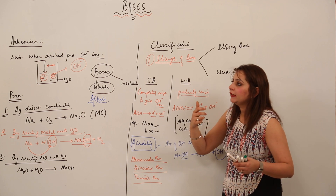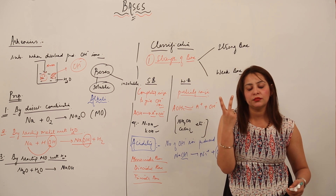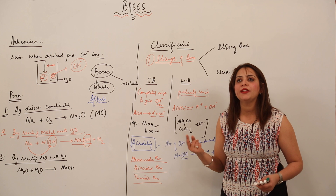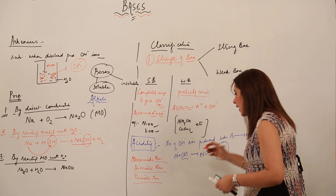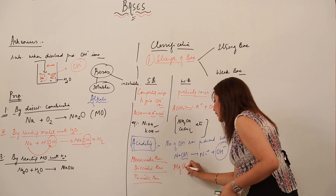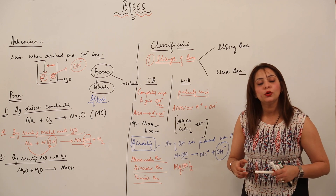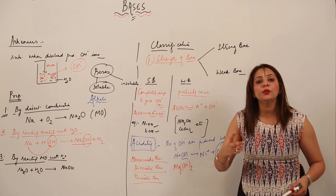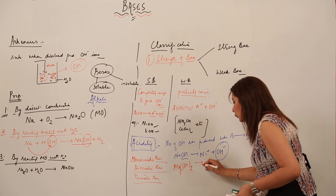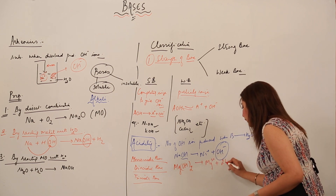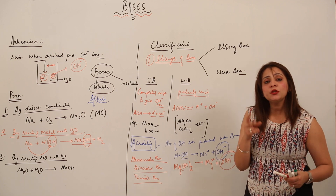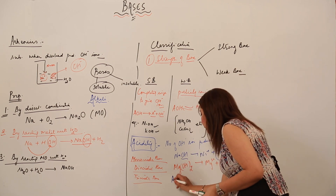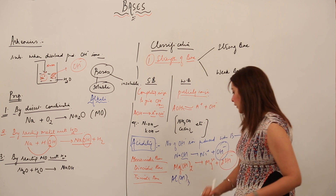For diacidic base, we need a base that carries two hydroxide ions in one molecule — for example, Mg(OH)₂. In one molecule of Mg(OH)₂, there are two hydroxide ions. When dissolved in water: Mg²⁺ and 2OH⁻. These two hydroxide ions indicate a diacidic base.